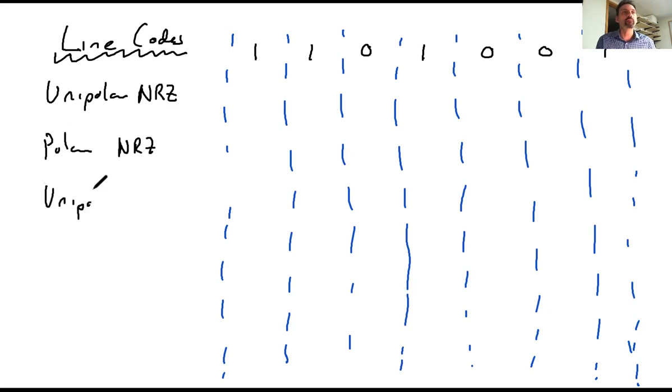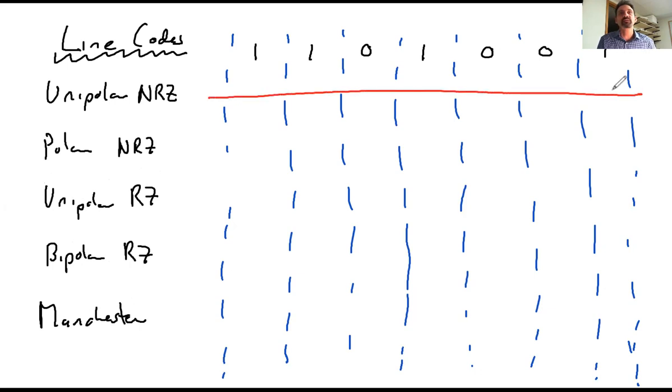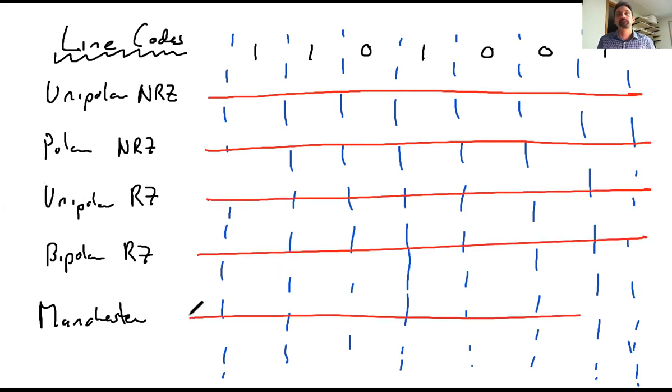Unipolar returned to 0, bipolar returned to 0, and Manchester. So suppose I want to communicate the information 1, 1, 0, 1, 0, 0, 1. And this is the bit period TB. The way this would look like is this: I would either have a positive A value whenever a 1 occurs or a 0 for a unipolar. Notice how during every period, my amplitude value is maintained at A.